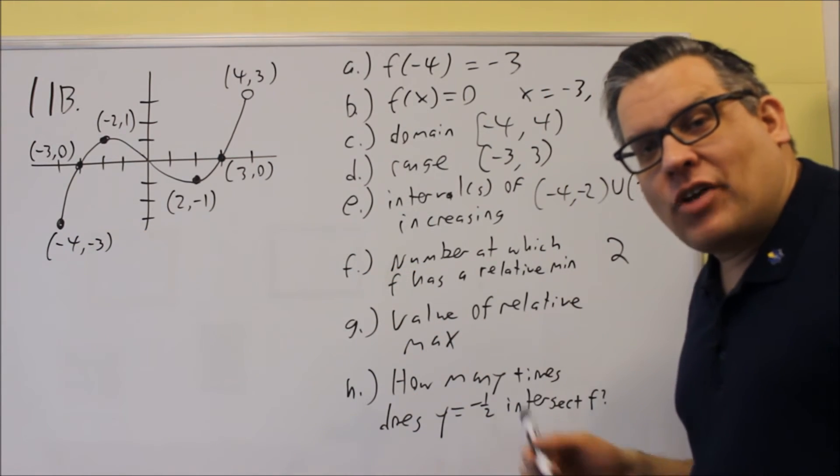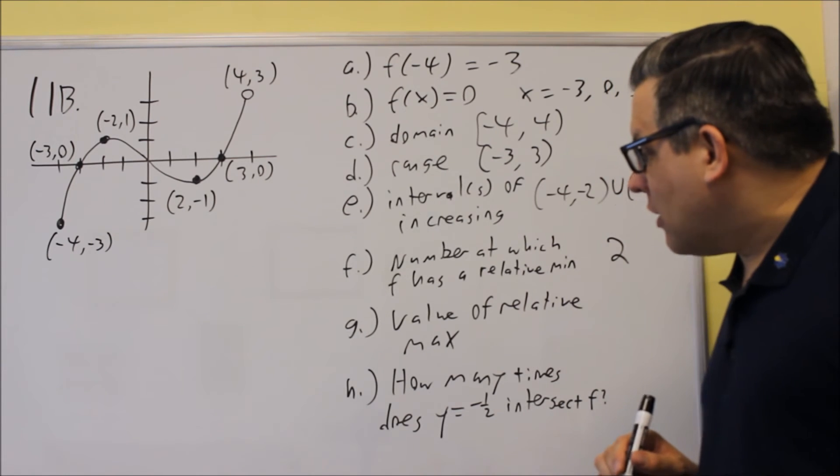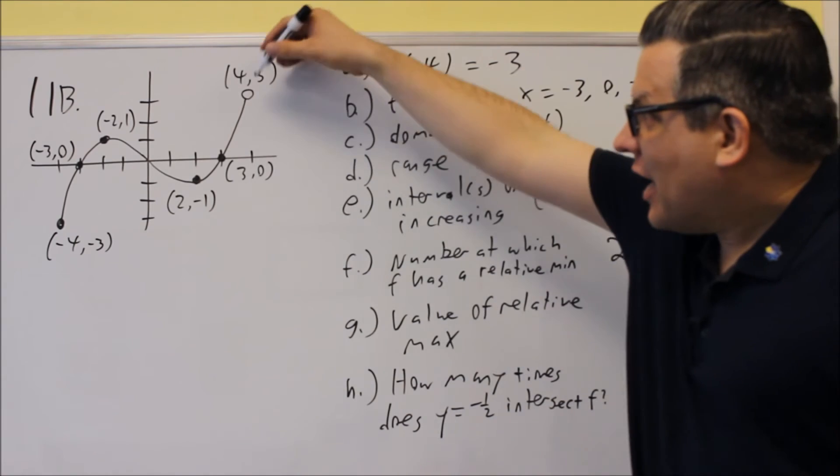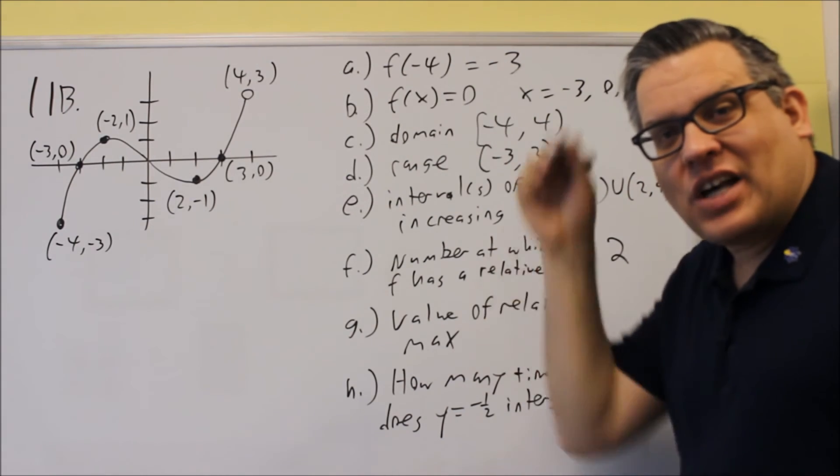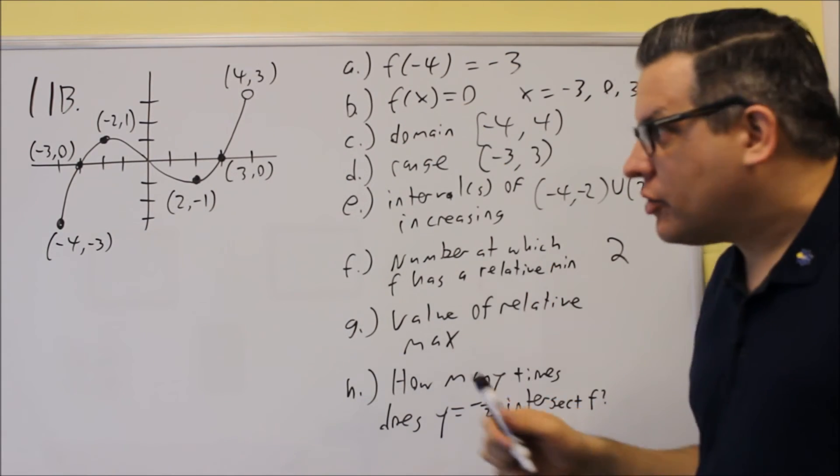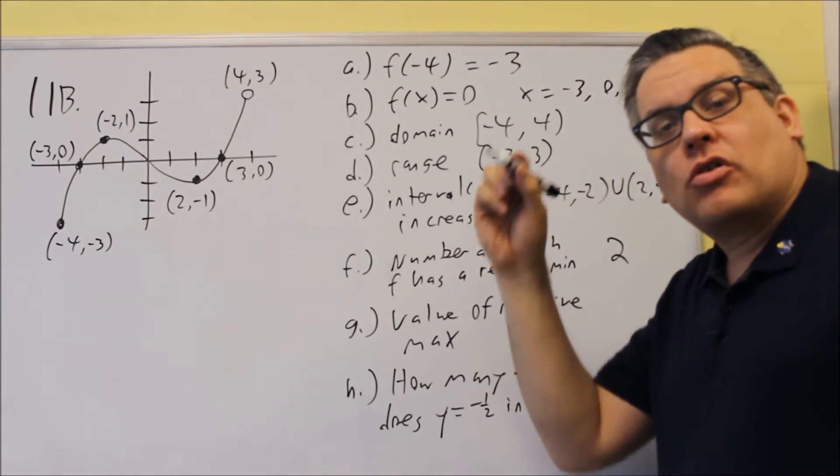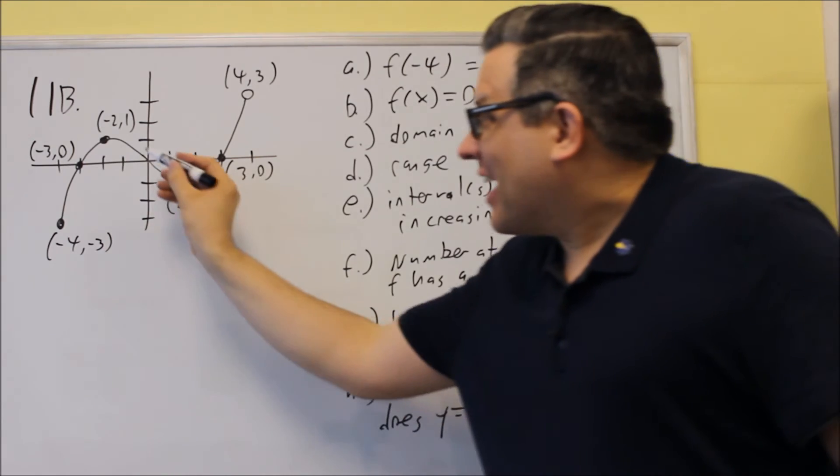Value of the relative max. Now, value of the relative max means that that is the y value at the relative max. Again, it's not this one, not the highest one on there. It says relative, so relative means you look at any place where the graph goes uphill and then it goes downhill.